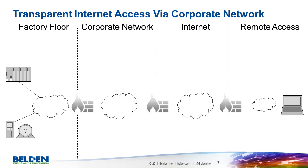In this transparent example, a connection to the internet already exists via the corporate network. To clarify, if somebody attaches a PC to the factory floor network, that person would get access to websites on the internet. All the routing is already in place. This is certainly the simplest topology.